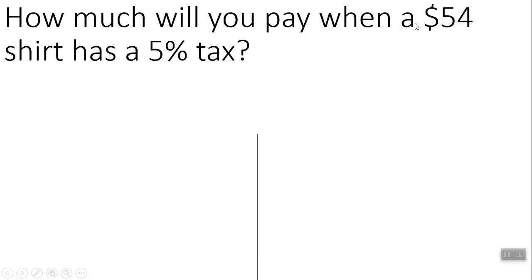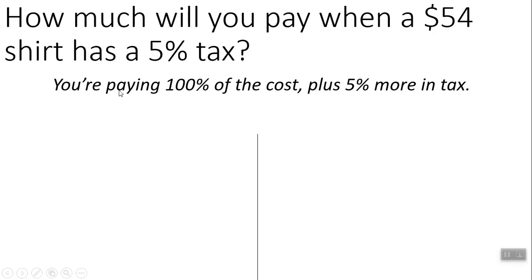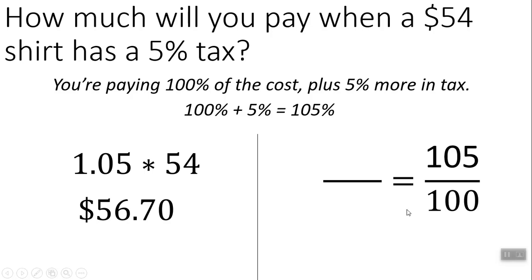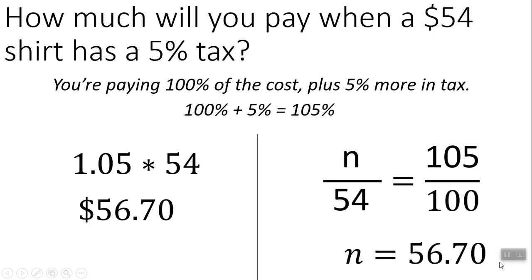How much will you pay when a $54 shirt has a 5% tax? You're paying 100% of the shirt plus 5% tax — that's 105% of the item. So you compute 1.05, which is 105% as a decimal, times 54, and you get your total cost with the tax. Setting up a proportion, you go 105 over 100, then out of 54 you do 54 times 105 divided by 100 and get the same thing. Note: if they asked only for the tax amount, you'd just do 5% of 54 — but since they want the total cost, you use 105%.